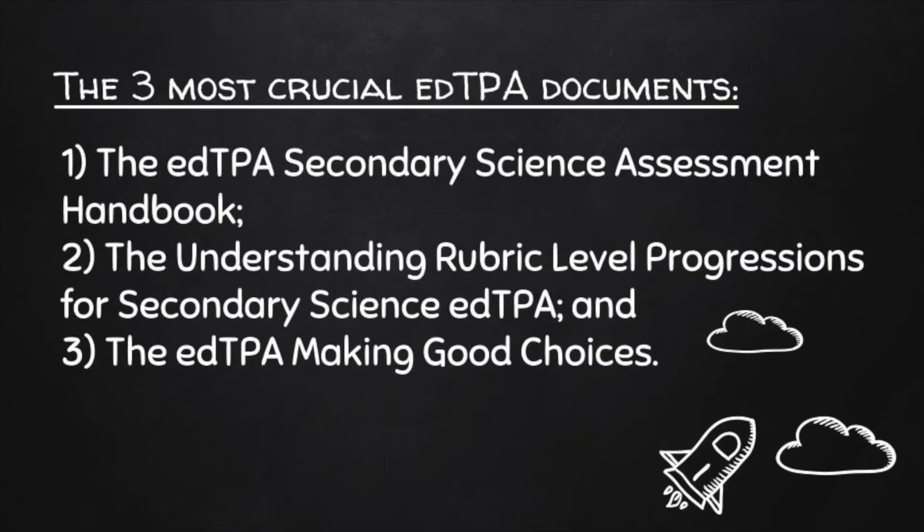If you do not pass the edTPA on your first attempt, you will need to resubmit. What you will need to resubmit depends on your score profile. The three most crucial edTPA supportive documents that you should study in depth are: the edTPA Secondary Science Assessment Handbook, the Understanding Rubric Level Progressions for Secondary Science edTPA, and the edTPA Making Good Choices.